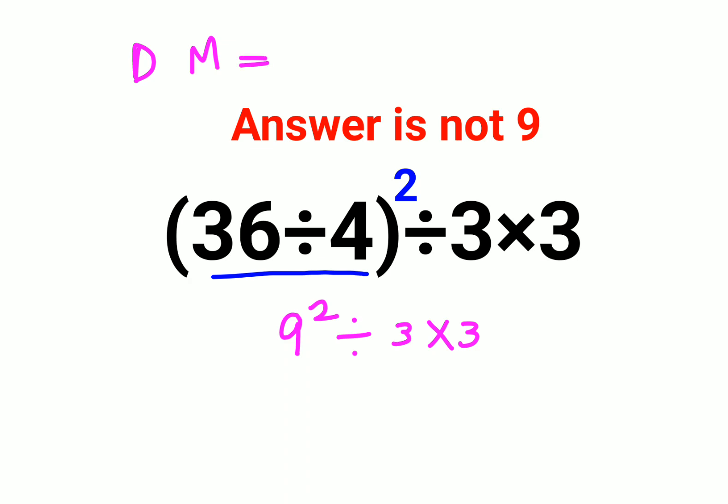Now the reason for that is, please remember: division and multiplication both hold equal precedence. So when you have a question like this which has division and multiplication, all you have to do is go from left to right.